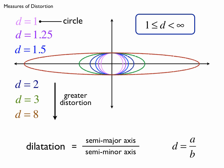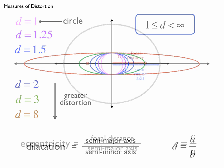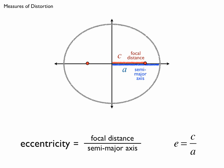Now you won't see dilatation used a lot. A more common measure of distortion is called the eccentricity. And you define the eccentricity by taking the focal distance and dividing by the semi-major axis. We'll denote this quantity E. E is C over A in this case.